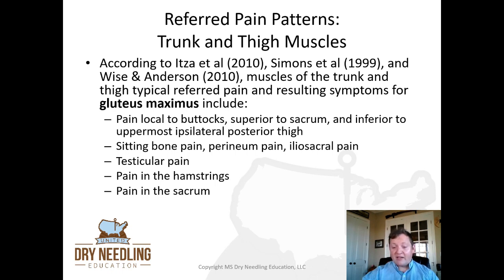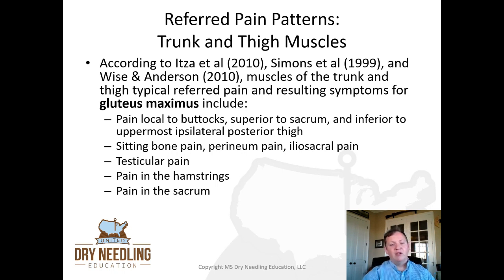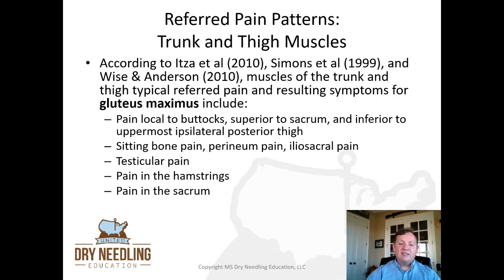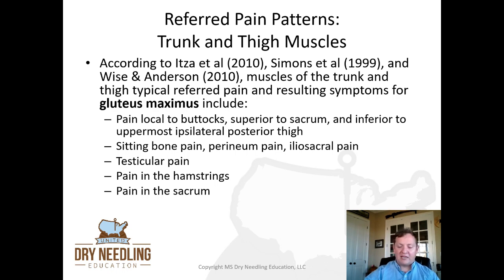The gluteus maximus — we traditionally think about just buttock pain, but look at what else is implicated. Pain local to the buttocks, superior to the sacrum, and inferior to the uppermost ipsilateral posterior thigh. Sitting bone pain, perineum pain, iliosacral pain, testicular pain, pain in the hamstrings, and pain in the sacrum. Just like the external obliques, the gluteals are almost always implicated in any type of testicular pain in individuals with male anatomy.